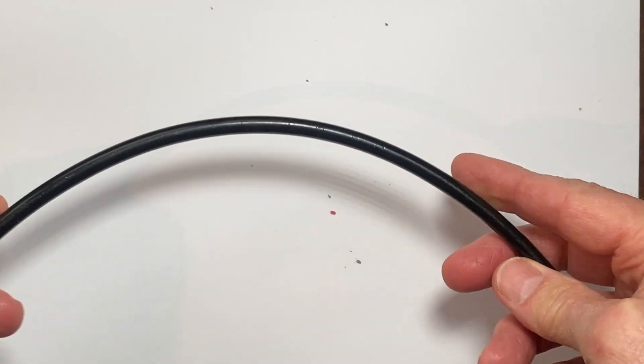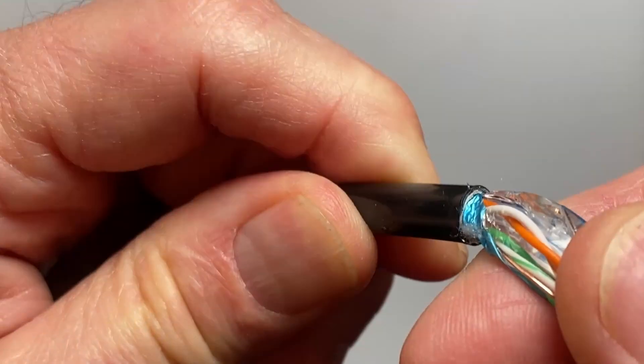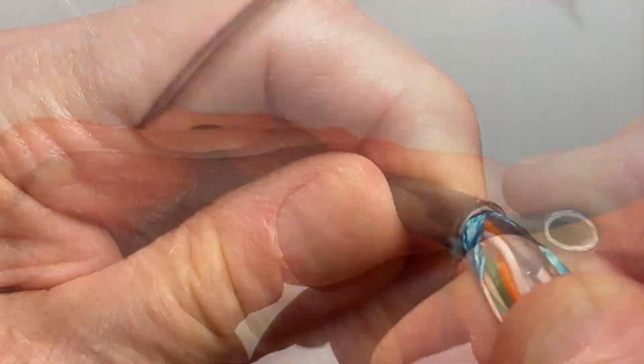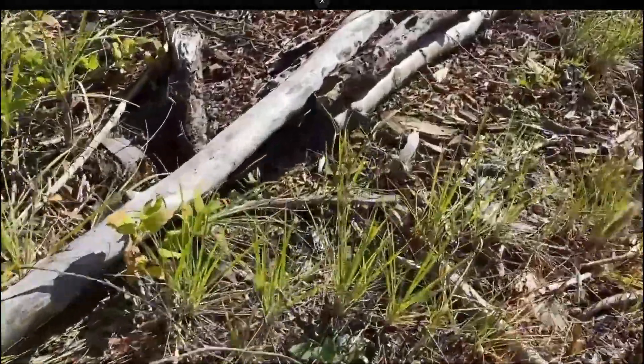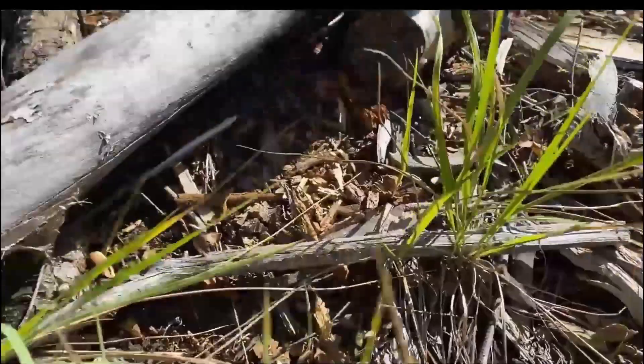CAT6 cable is available with tough UV resistant jackets and some are even gel-filled for direct burial applications. I do cover my CAT6 under logs in the field to protect them from animals.